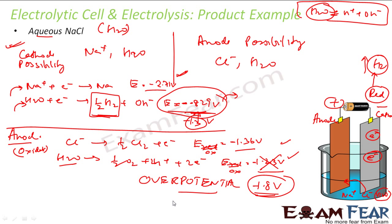Now let's compare. To oxidize water you need 1.8 volts. To oxidize chlorine you need 1.36 volts — which will win? Obviously chlorine. So chlorine gas will come out here.